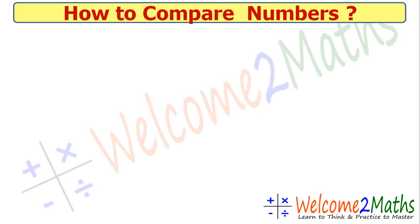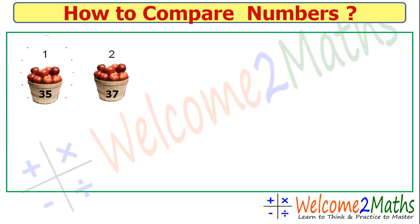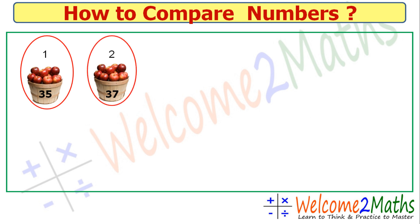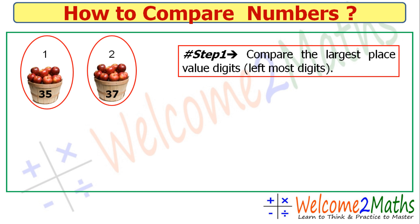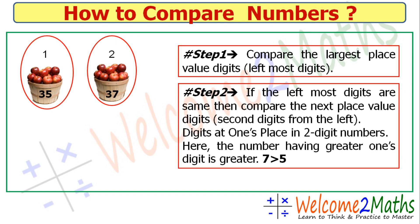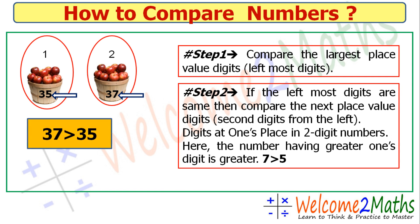Next example: basket 1 has 35 apples and basket 2 has 37 apples. Step 1: compare the leftmost digits — both have 3 in the tens place, so they are the same. Step 2: compare the next digits — the ones place. 7 is greater than 5, so 37 is greater than 35. We can also write 35 is less than 37.